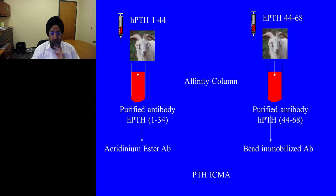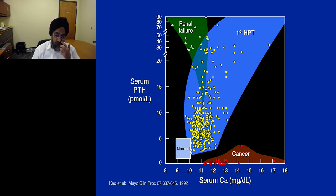In the beginning, we raised our own antibodies at Mayo Clinic — injecting one goat with the N-terminal peptide and another with the C-terminal peptide, then purifying different antibody clones, immobilizing one (C-terminal) to a solid phase and labeling the other with acridinium ester to generate signal. In 1992, we published a lab-developed assay at Mayo Clinic which was able to separate patients with primary hyperparathyroidism from most patients with secondary hyperparathyroidism, and clearly separate hypercalcemia due to malignancy.